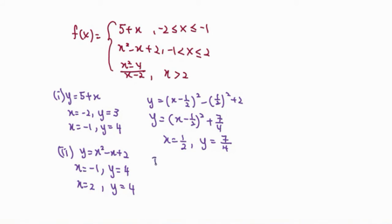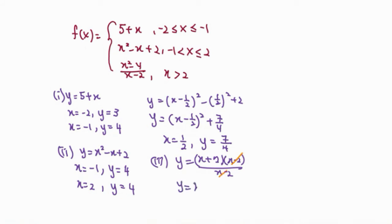For the third piece, y equals x squared minus 4 over x minus 2. We factorize to get (x plus 2)(x minus 2) over (x minus 2), which simplifies to y equals x plus 2. The starting point is at x equals 2, giving y equals 4.